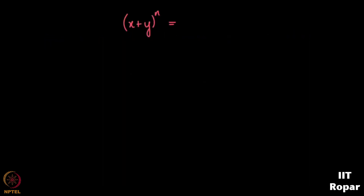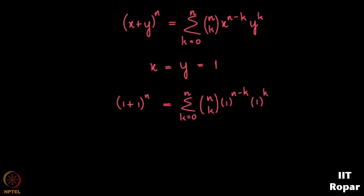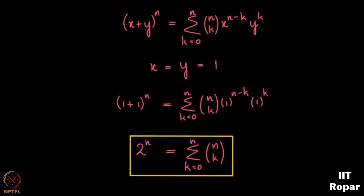We know the binomial theorem states (x + y)^n = Σ (k=0 to n) C(n,k) · x^(n−k) · y^k. What happens when we plug in x = 1 and y = 1? It becomes 2^n = Σ (k=0 to n) C(n,k), since 1^(n−k) · 1^k = 1. So the sum of all binomial coefficients equals 2^n.